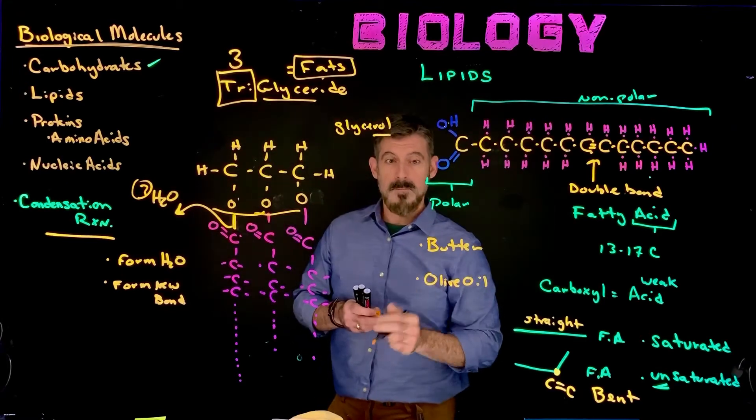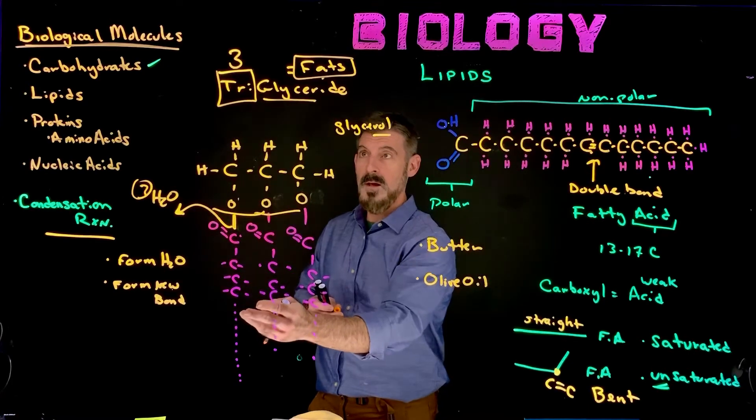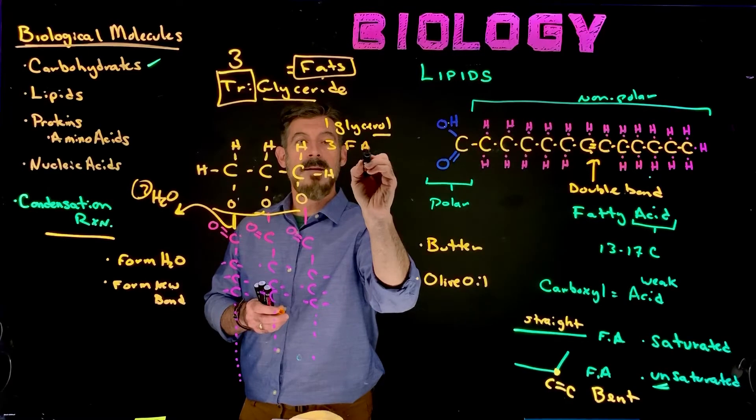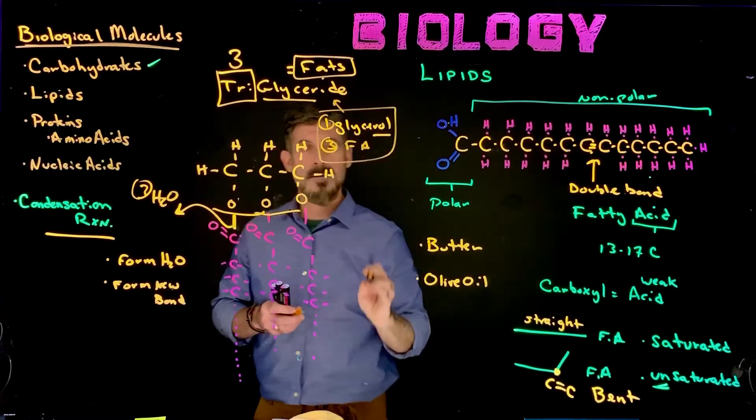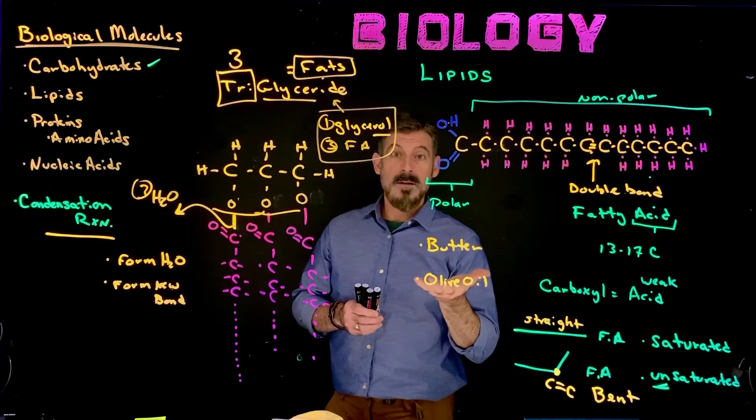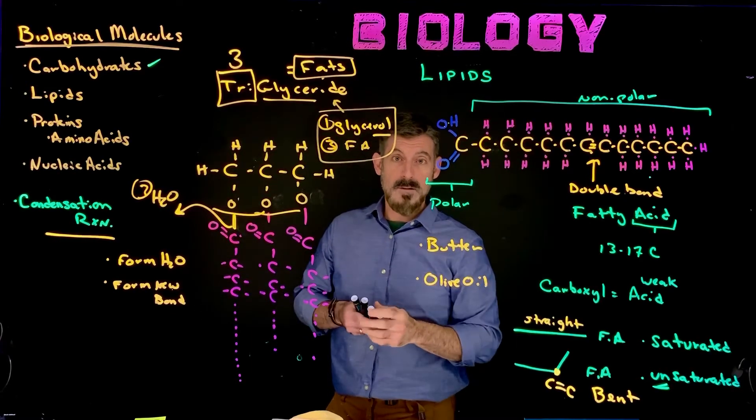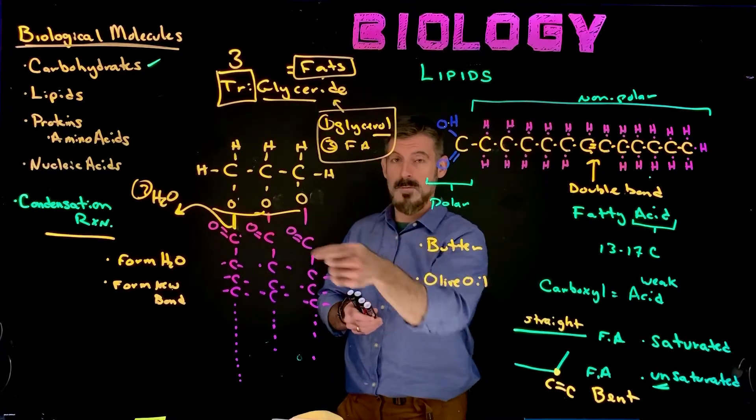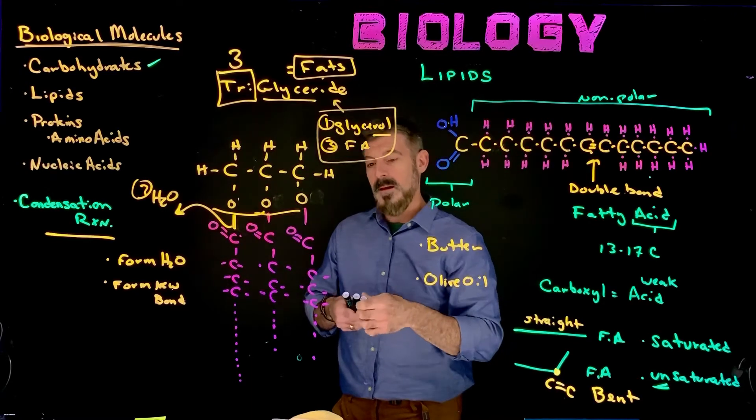Butter and olive oil. Both of these are triglycerides. Both of these are molecules made up of one glycerol and three fatty acids. So there's one glycerol and three fatty acids. That's a triglyceride. But they're different. At room temperature, butter sits out and it is a solid. At room temperature, olive oil is a liquid. It is an oil. So what's the difference? If they're both made up of glycerol and three fatty acids, what makes them different?